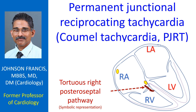Permanent Junctional Reciprocating Tachycardia, also called Coumel Tachycardia, is known in short as PJRT. It is an orthodromic atrioventricular reentrant tachycardia using a concealed accessory pathway with decremental properties as the retrograde limb.